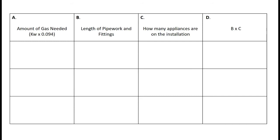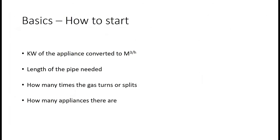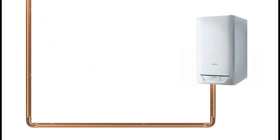This is all you need to do pipe sizing. If you remember from the last lecture, we need four basic things to pipe size. The first thing we're going to look at is the kilowatt of the appliance converted to meters cubed per hour.